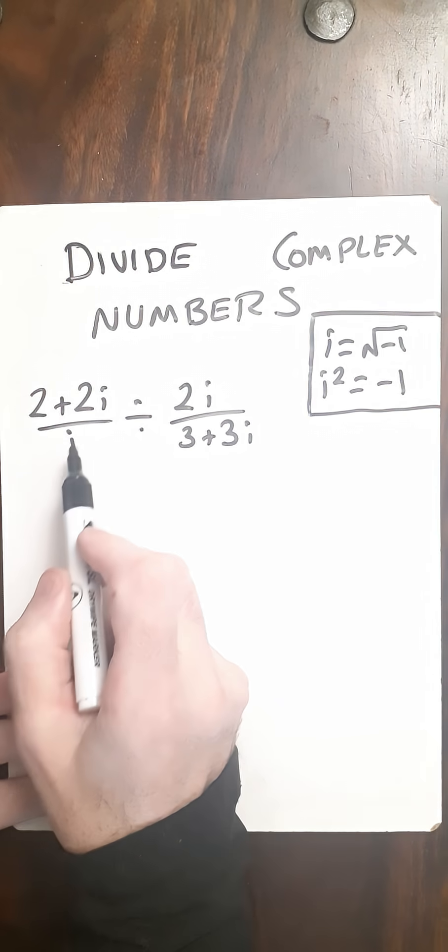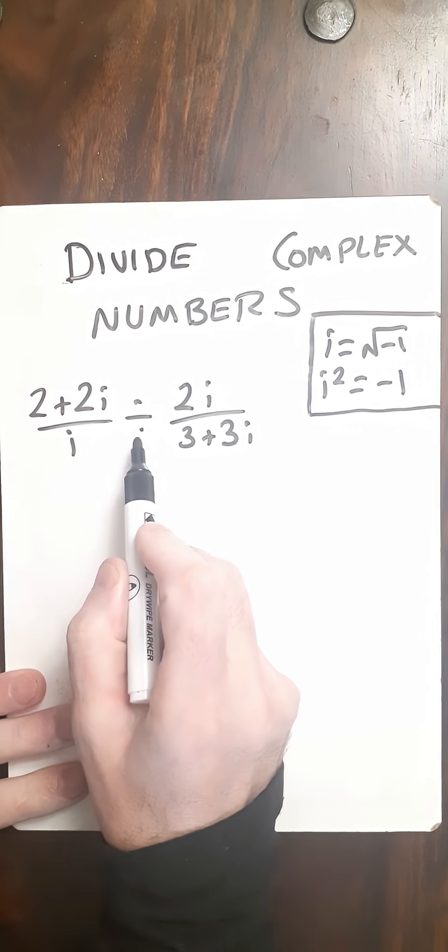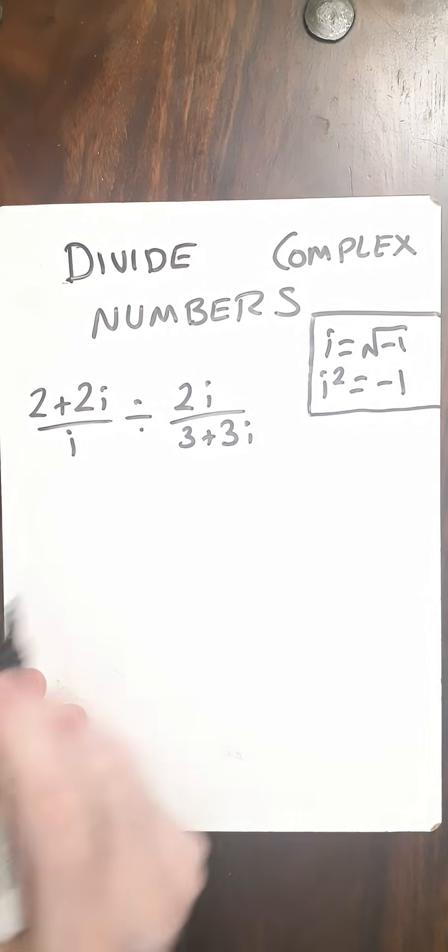So divide complex numbers, 2 plus 2i over i divided by 2i over 3 plus 3i.